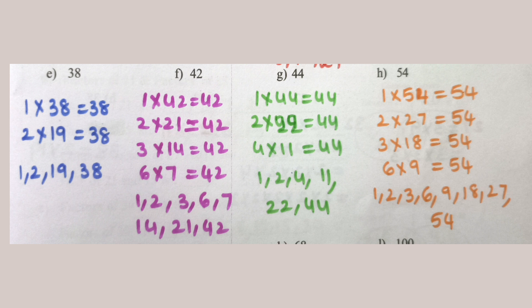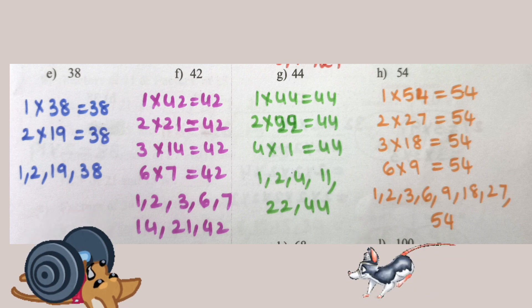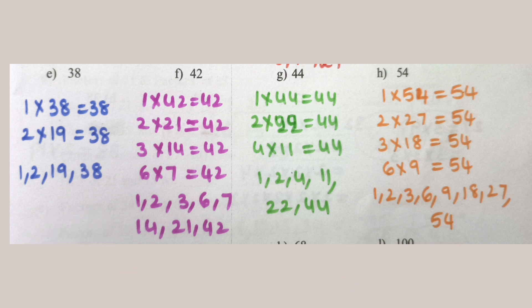44: 1×44=44, 2×22=44, 4×11=44. So factors of 44 are 1, 2, 4, 11, 22, 44. 54: 1×54=54, 2×27=54, 3×18=54, 6×9=54. So factors of 54 are 1, 2, 3, 6, 9, 18, 27, 54.